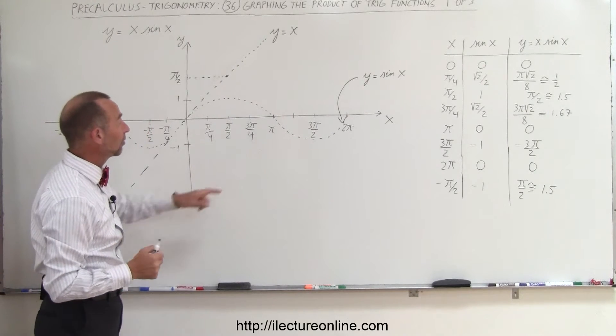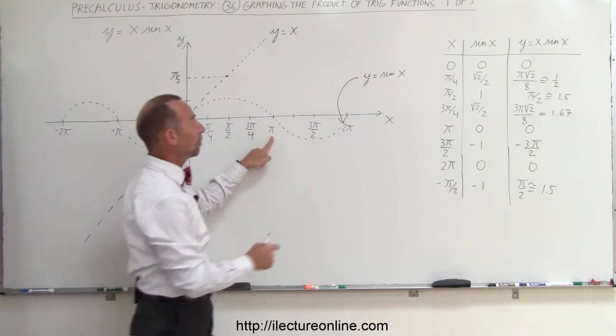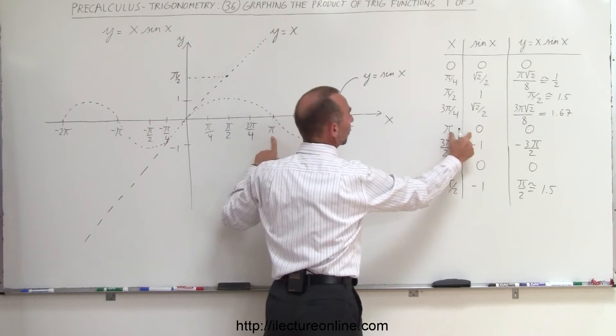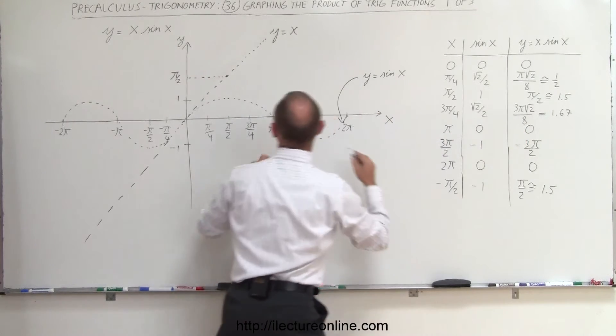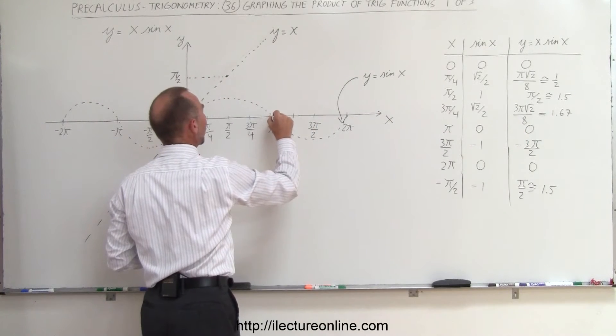Now, what will happen when x is equal to pi? Well, when x equals pi, sine of x is 0. When you multiply the two together, you get 0. So that means at this point, the function is back down to here.